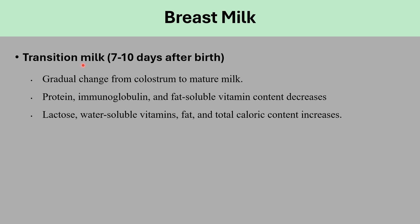Transition milk follows colostrum between 7 and 10 days after birth. The gradual change from colostrum to mature milk is the transition milk. The protein, immunoglobulin, and fat-soluble vitamin content will decrease, while lactose, water-soluble vitamins, fat, and total caloric content will increase.